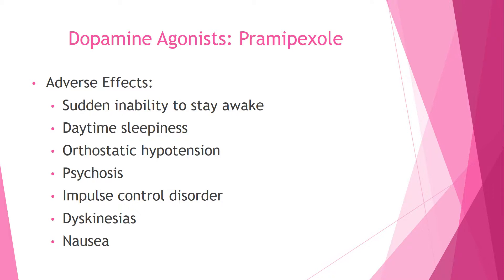Adverse effects of pramipexole include a sudden inability to stay awake — patients must notify the provider immediately as this is dangerous when driving or operating machinery. There is also potential for daytime sleepiness, so alertness-requiring activities and CNS depressants such as alcohol should be avoided. Orthostatic hypotension with lightheadedness and dizziness may occur — advise slow position changes. Psychosis with visual hallucinations and nightmares occurs especially in older adults. Impulse control disorders such as gambling, shopping, binge eating, and hypersexuality may appear within about nine months of starting the medication.